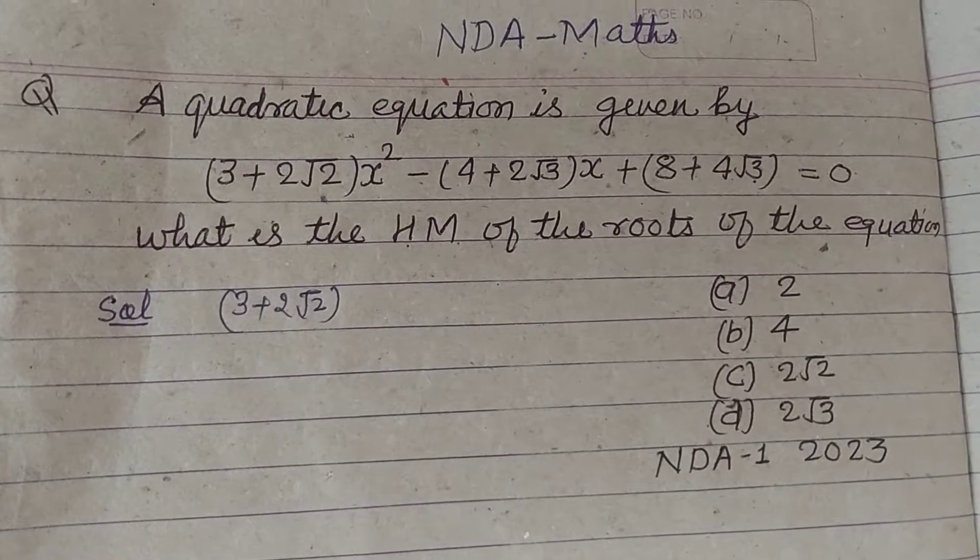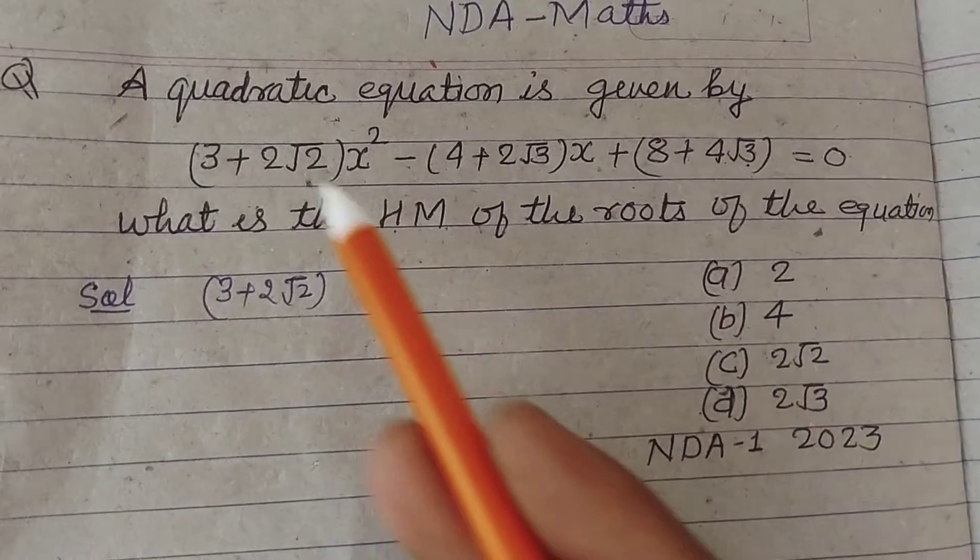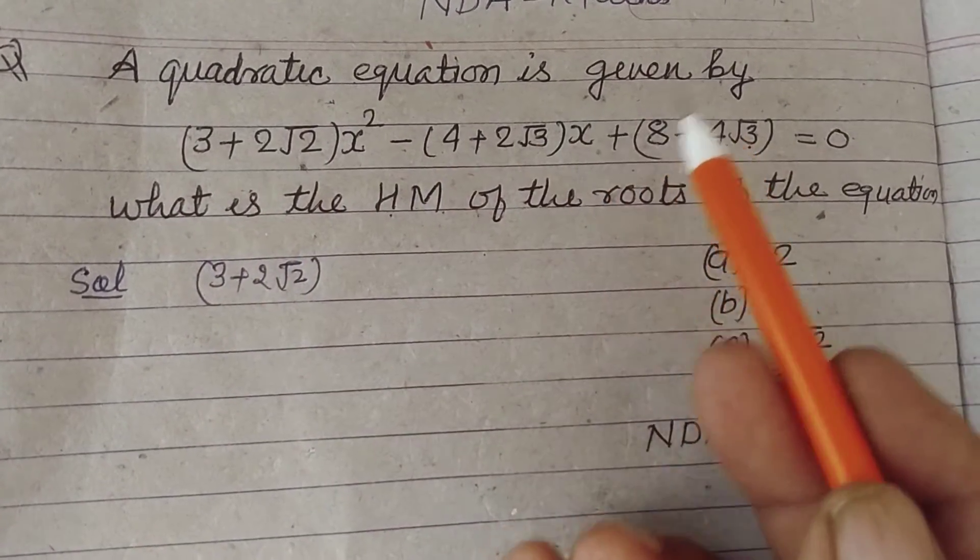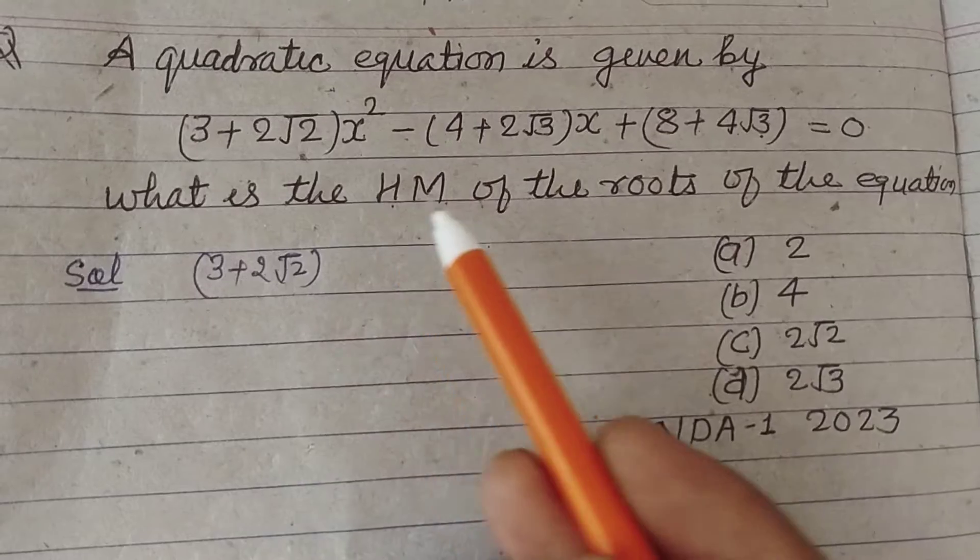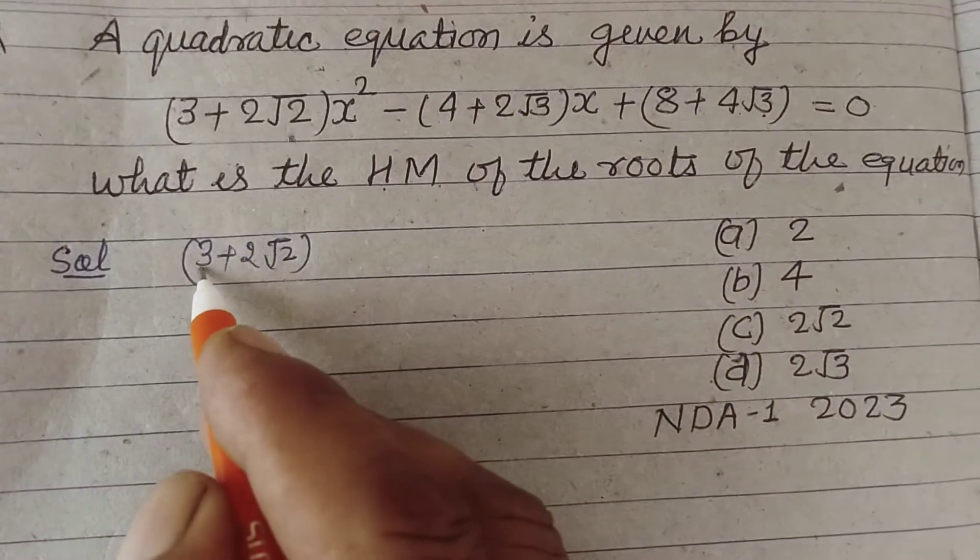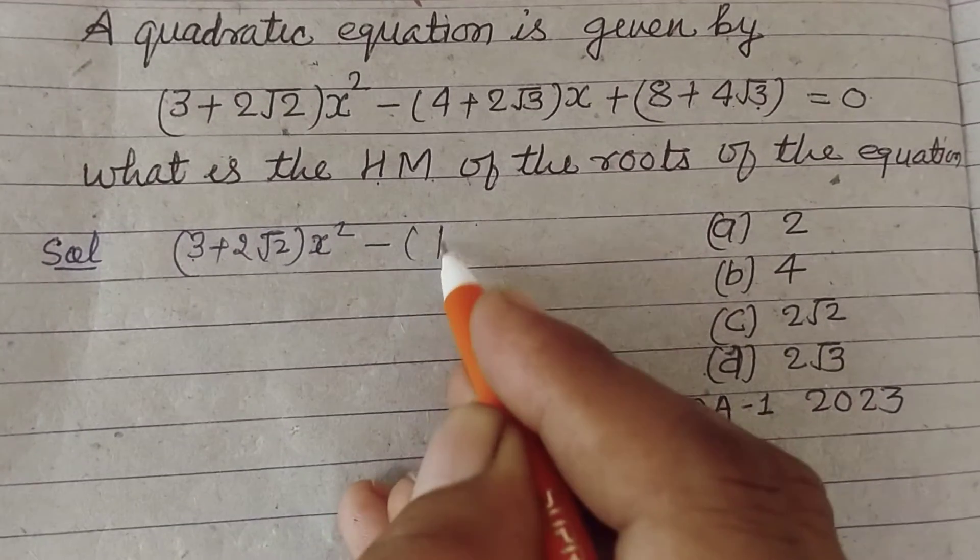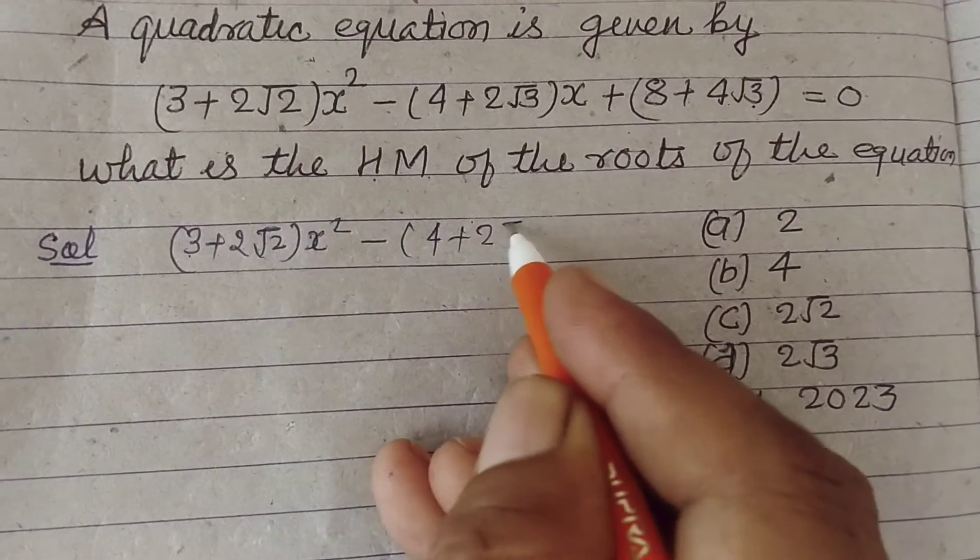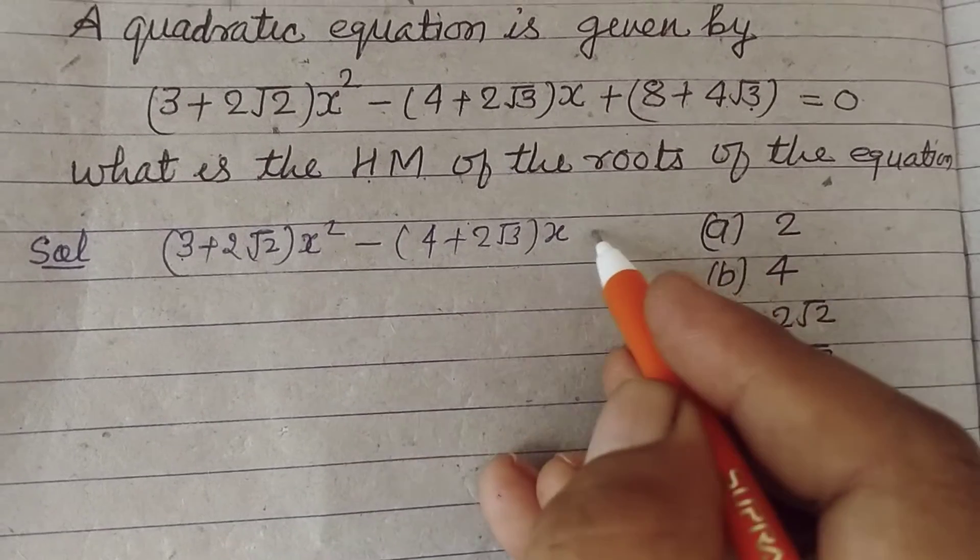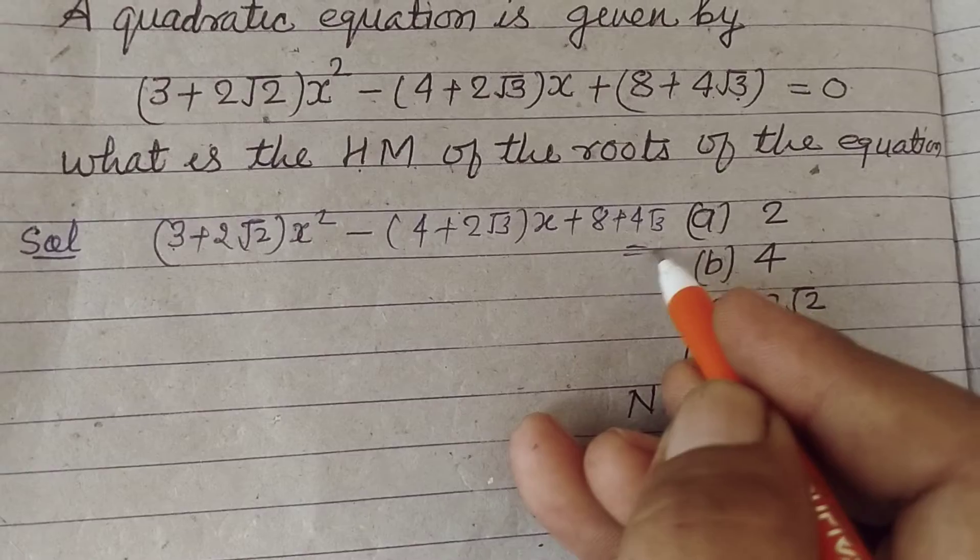Hello student, welcome to this YouTube channel. Question from NDA-1 2023: A quadratic equation is given by (3 + 2√2)x² - (4 + 2√3)x + (8 + 4√3) = 0. What is the HM of the roots of the quadratic equation?